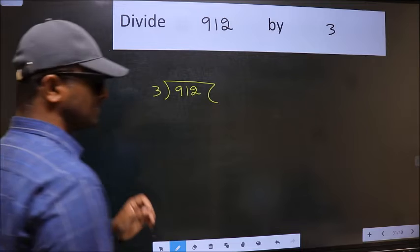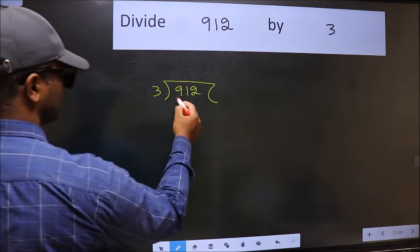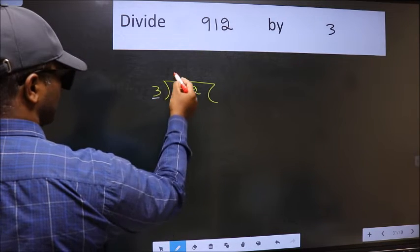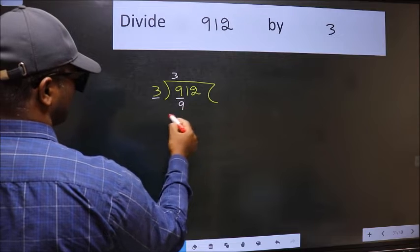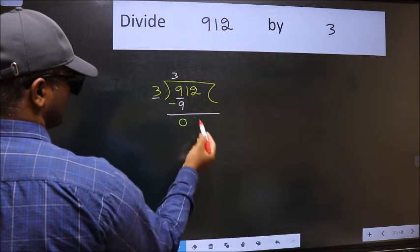This is your step 1. Next, here we have 9 and here 3. When do we get 9 in the 3 table? 3 times 3 is 9. Now we should subtract. We get 0.